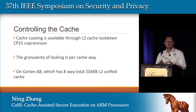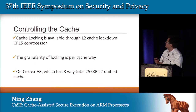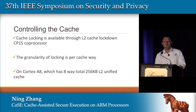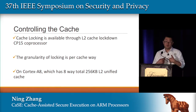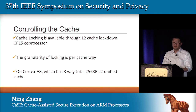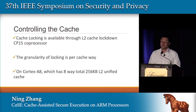Now for implementation details. The first challenge is controlling the cache. Cache is designed to be a transient feature — you're supposed to use it as a black box. We use the cache lockdown registers. To give designers performance enhancement capability, ARM introduced cache lockdown: if you know a cache will be frequently used, you can lock it down to avoid cache pollution. The granularity of locking on our Cortex-A8 processor is per cache way. There are eight cache ways of total size 256 KB of L2 unified cache in Cortex-A8, so we can lock the cache in 32 KB, 64 KB, or 96 KB increments.